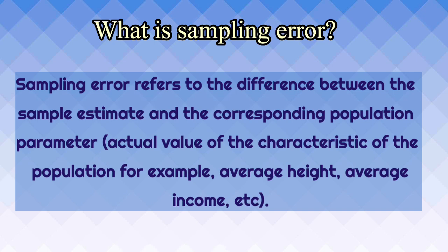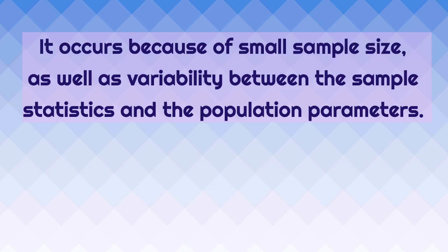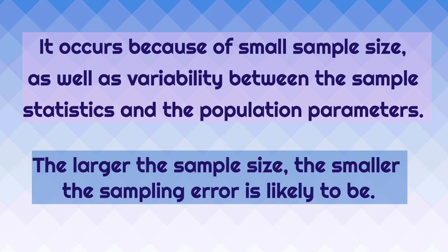Sampling error refers to the difference between the sample estimate and the corresponding population parameter, which is the actual value of the characteristics of the population — for example, average height, average income, etc. It occurs because of small sample size as well as variability between the sample statistics and the population parameters. Larger the sample size, smaller the sampling error is likely to be.